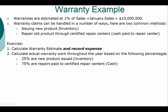Let's look at an example. Warranties are estimated at one percent of sales, and January sales are ten million dollars. So ten million times one percent gives us an estimated warranty claims amount of one hundred thousand dollars. Warranty claims can be handled in multiple ways, but two common methods are: issuing new product from inventory — since inventory is an asset with a debit balance, we credit inventory to take it out and give it to whoever we're providing the warranty to.